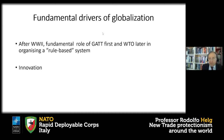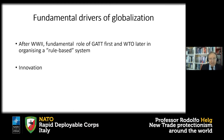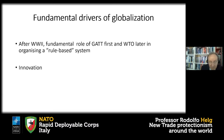A fundamental driver of globalization after the Second World War was first the creation of institutions. The important ones for us are firstly the GATT — which was not really an institution but simply an agreement — and then the WTO, which grew around the GATT and is a proper institution. These institutions were created to organize the international environment on a rule-based system.